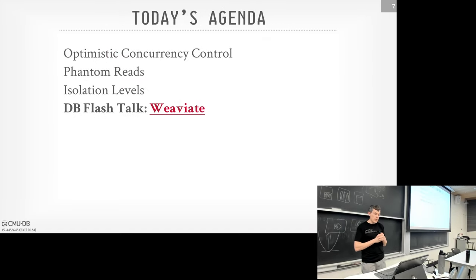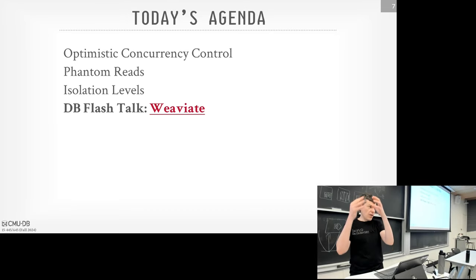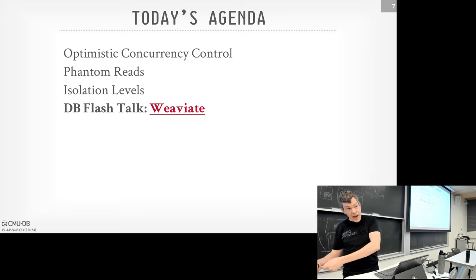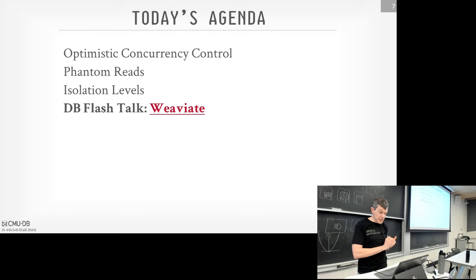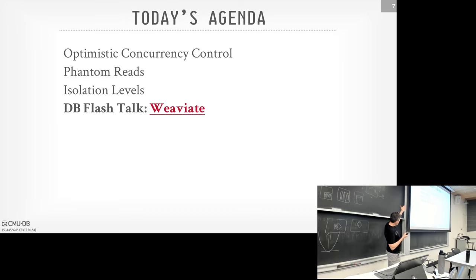Today we're going to be spending most of our time talking about the optimistic concurrency protocol. The category of protocols we're talking about today is the optimistic category, as opposed to two-phase locking which is the pessimistic category. The main protocol that everyone uses in the optimistic category is called Optimistic Concurrency Control, or OCC. There's a category of optimistic concurrency protocols of which OCC is the main one.